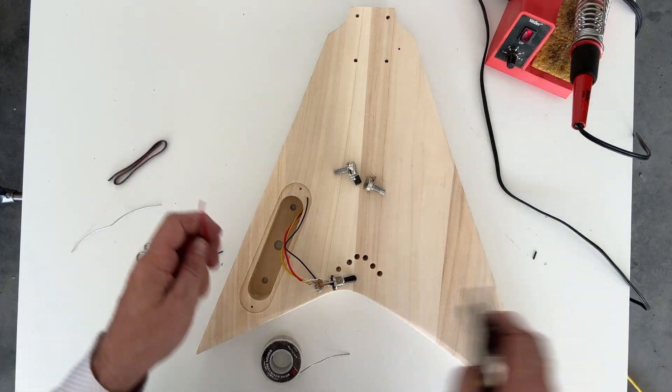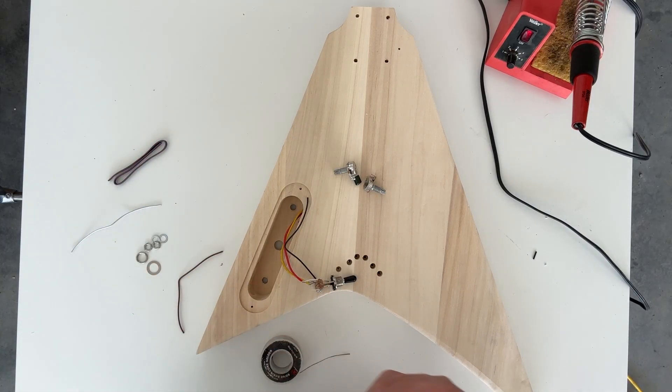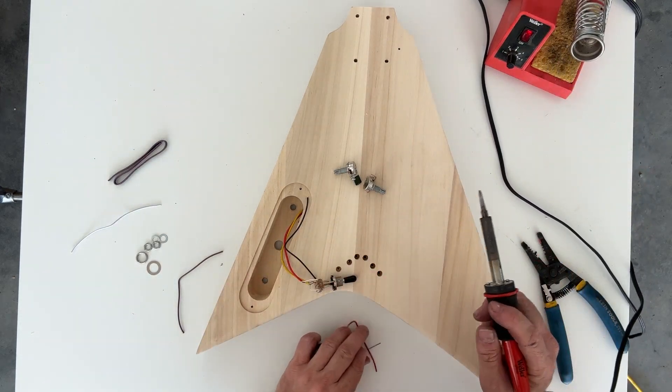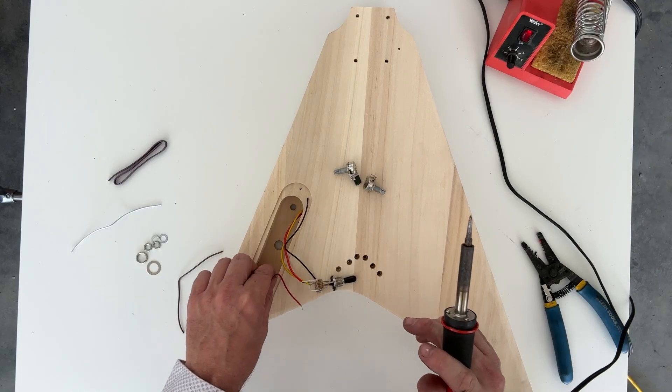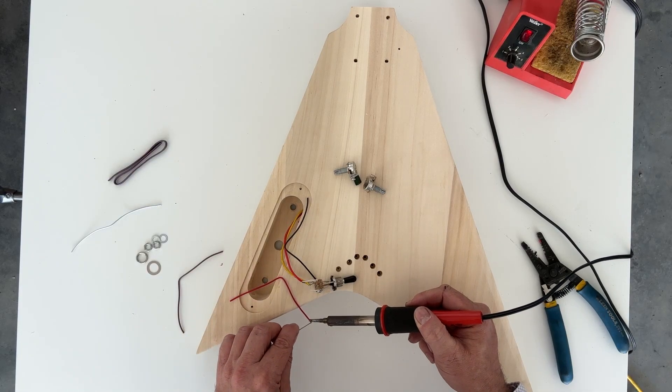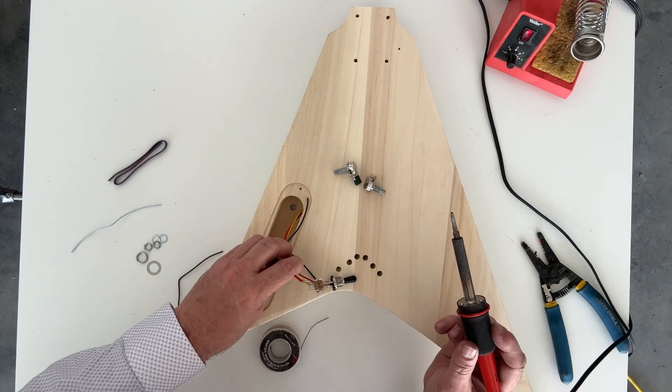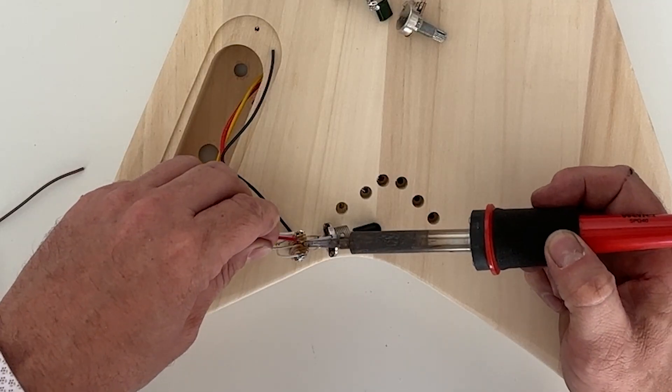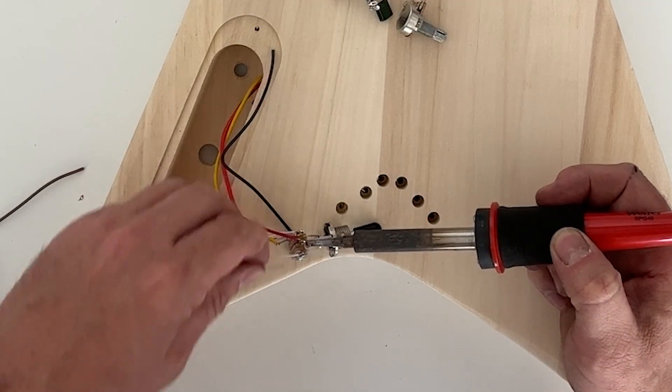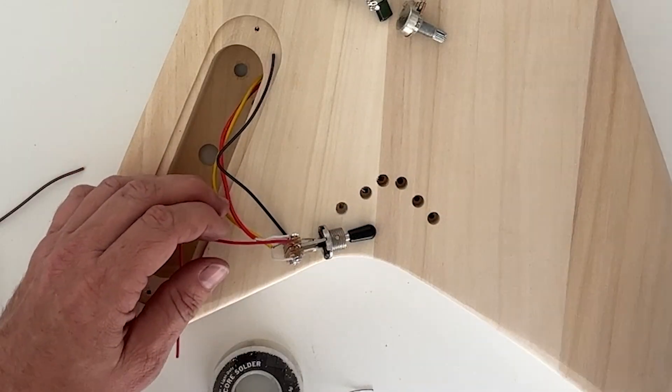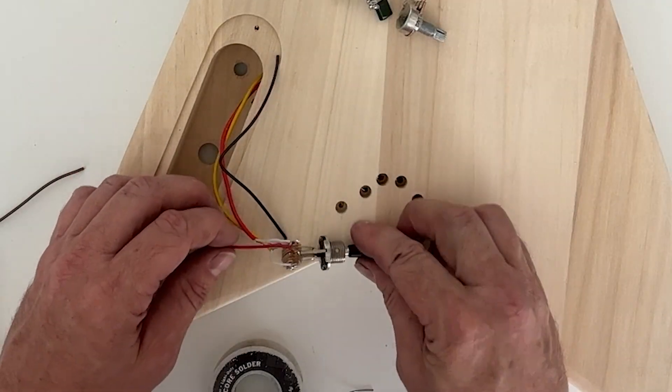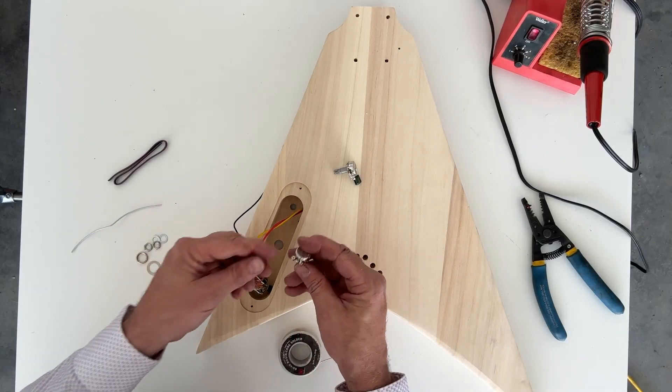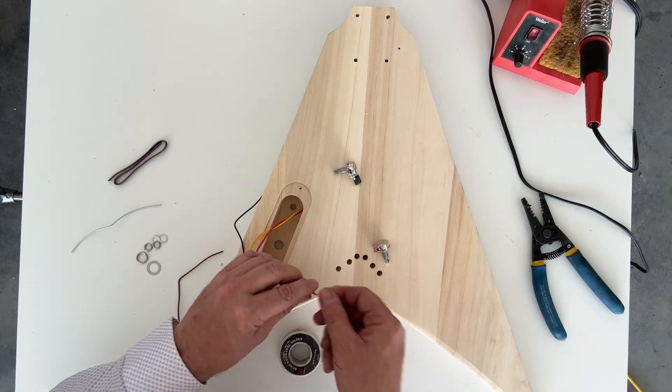Now we'll do an output wire that will go to our pots. I'll tin this wire, and this will go to the center lug on the switch. We'll take our volume pot—the hot is going to go to this very first lug on our volume.